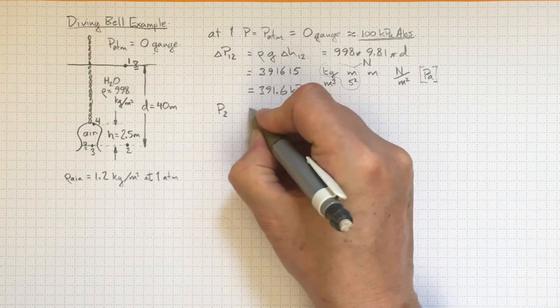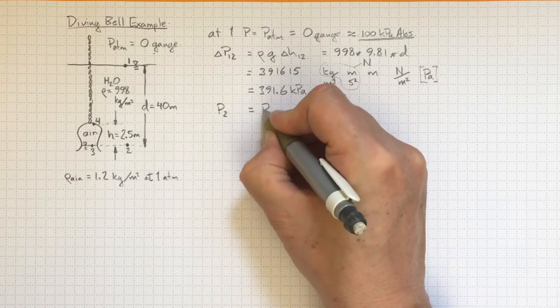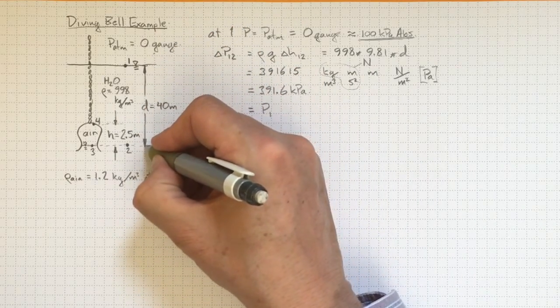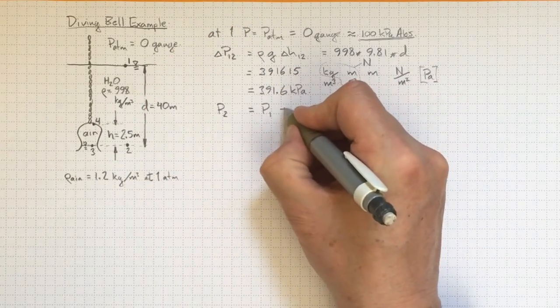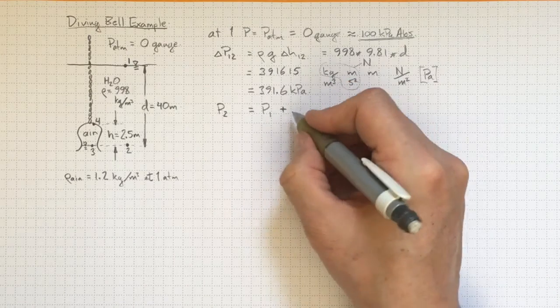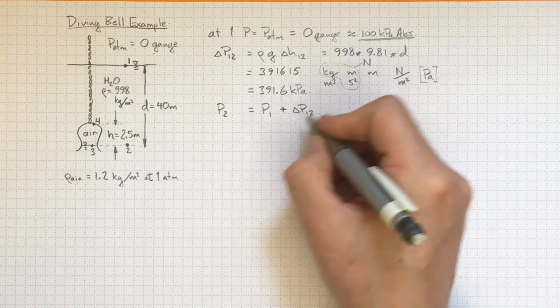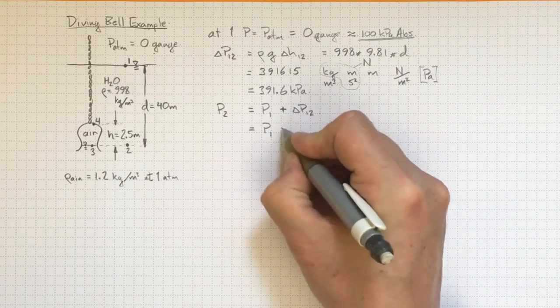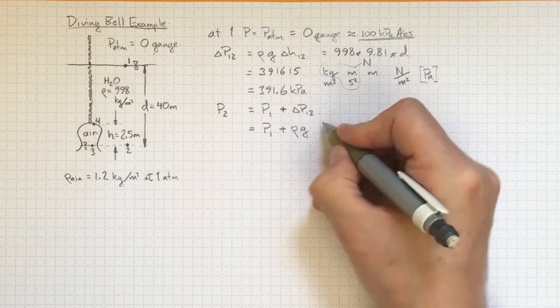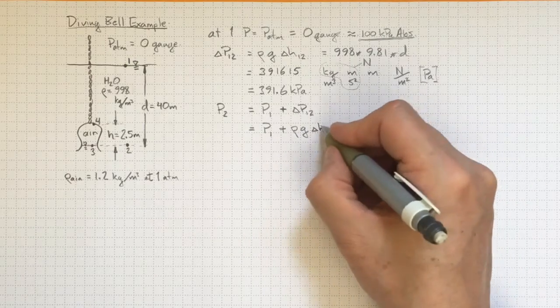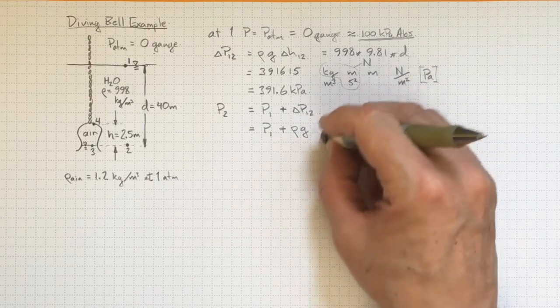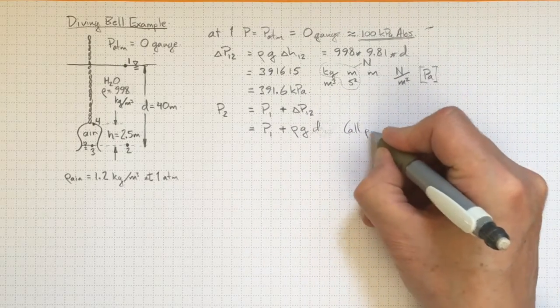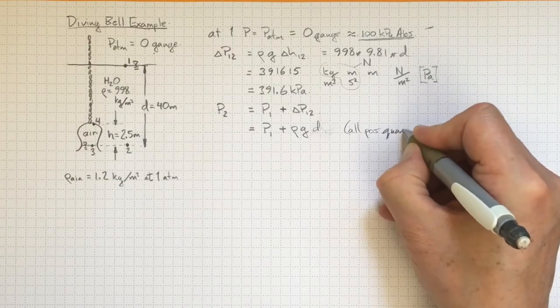Pressure at 2 will be equal to whatever the pressure was at 1, and we are going downwards in elevation, so we know the pressure is increasing, so plus the delta p from 1 to 2. Or if we were writing that out with our symbols, that'll be p1 plus rho g delta h from 1 to 2, or rho g times d, if we take all of those as positive quantities.